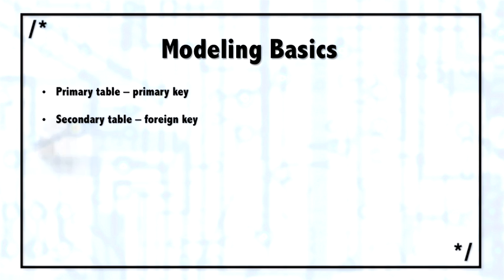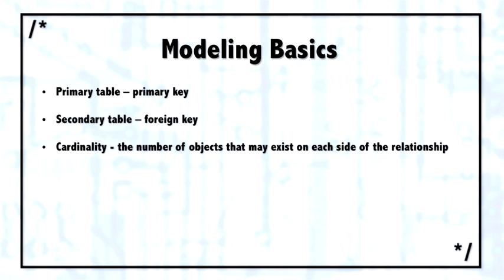Three other key terms. One is cardinality, which means how many objects can exist on each side of that relationship. For example, is it one to one, one to many? Cardinality is usually described as either zero, one, or many. Zero, one, or infinity.